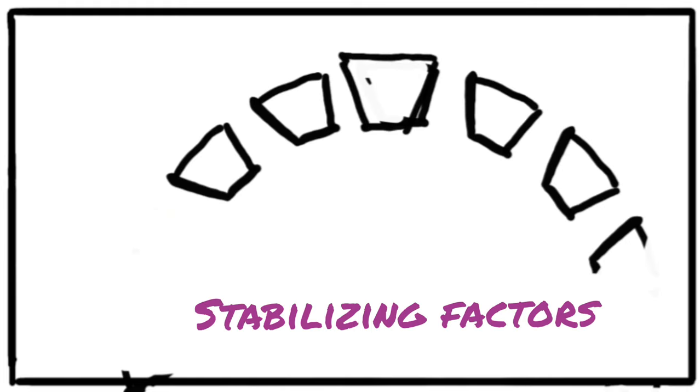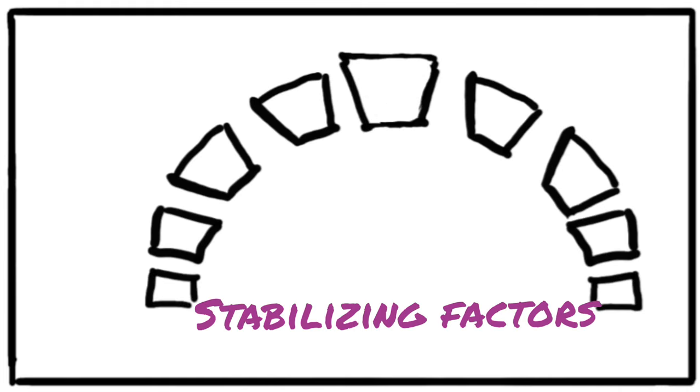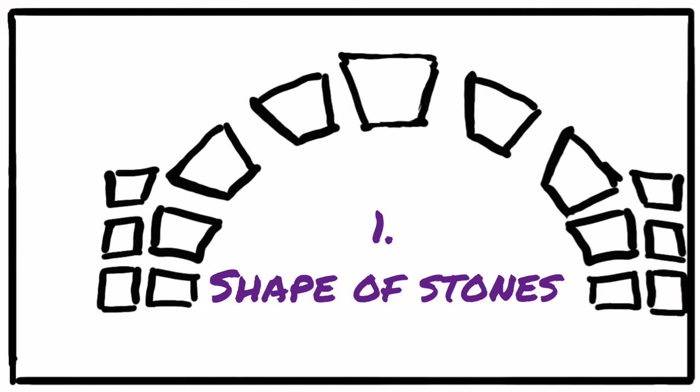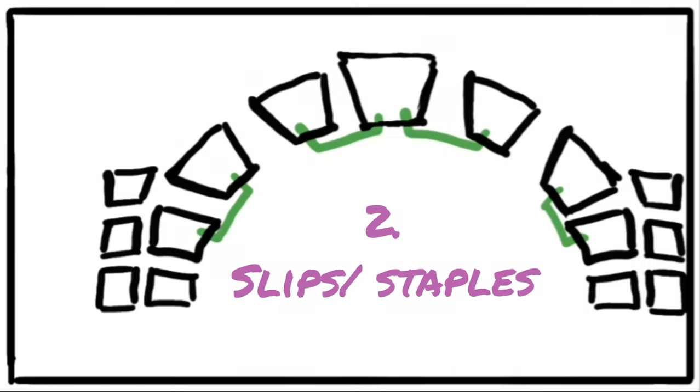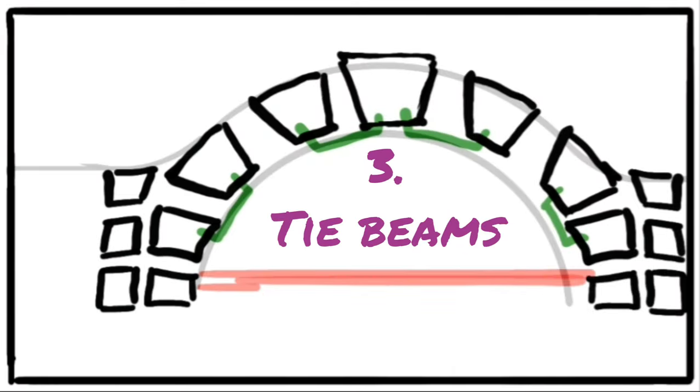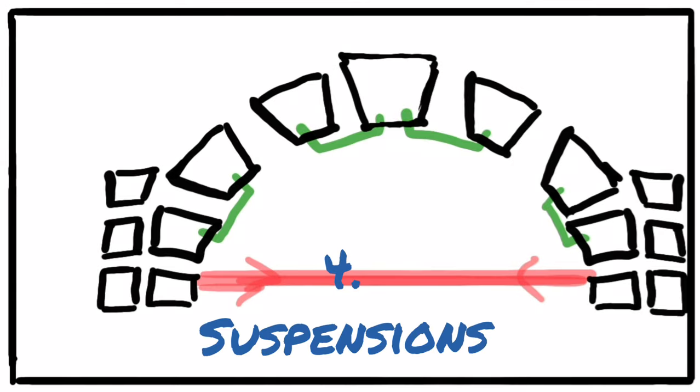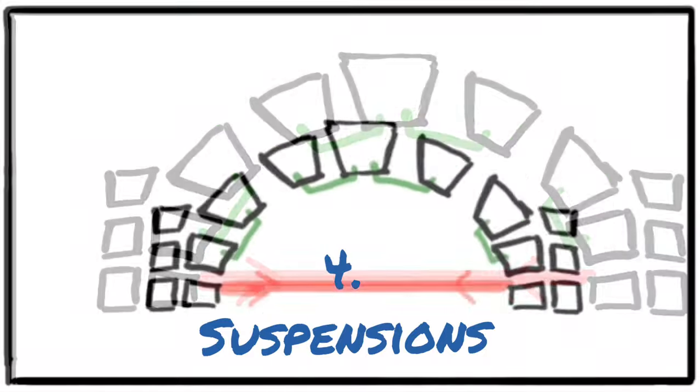Arches, like the ones we usually see in bridges, have several factors supporting and stabilizing it. The first are the stones with their specific shapes fitting each other to form an arch. Then there are slips or staples, smaller structures holding the adjacent pieces of stone firmly together. Tie beams are longer structures that span across the arch. And lastly, suspensions give an upward force to maintain the shape of the arch.